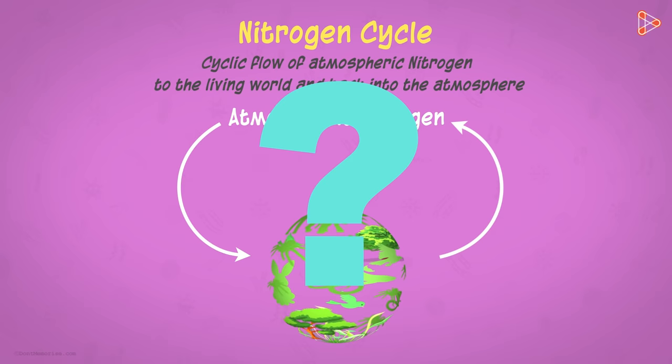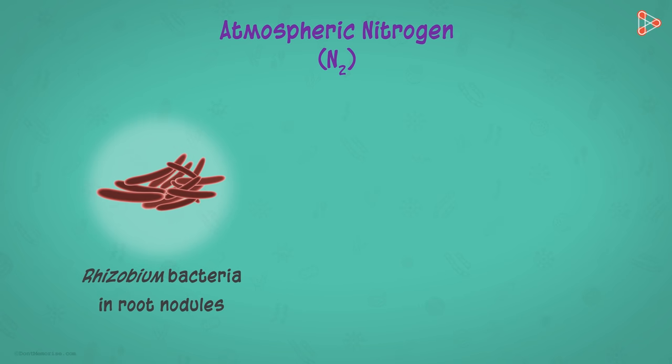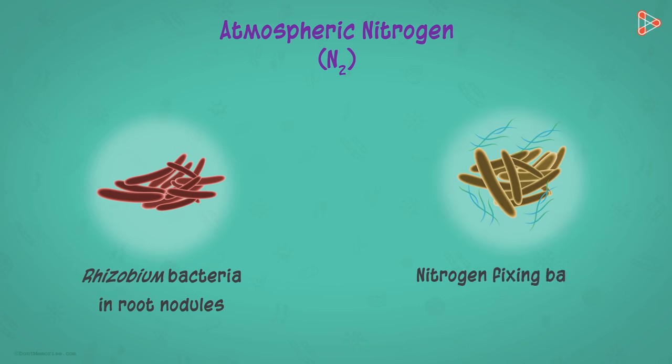But how does this cycle actually flow? Let's have a look. As we know, the atmospheric nitrogen is fixed in two major ways. Firstly, by the rhizobium bacteria living in root nodules of the leguminous plants. And secondly, by nitrogen-fixing bacteria and blue-green algae in the soil.